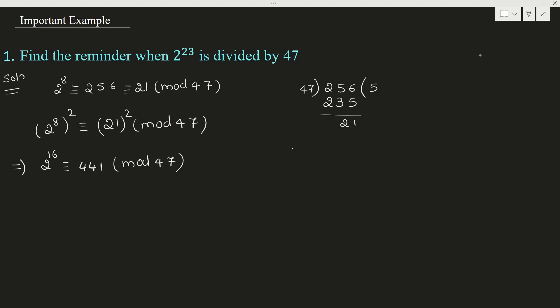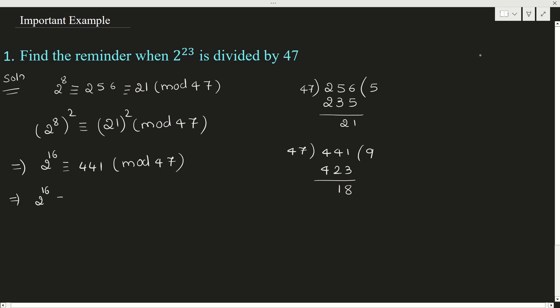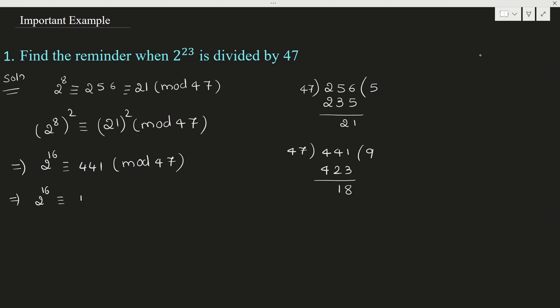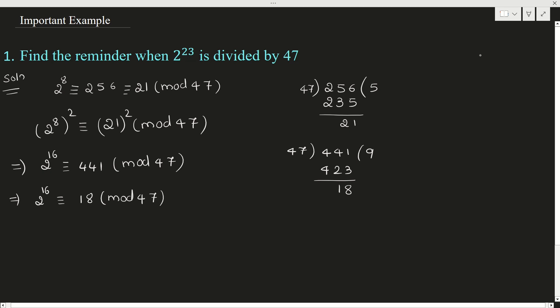Now divide 441 by 47. We know 47 times 10 is 470, so check the previous: 47 times 9 gives 423. So the remainder is 18. We can write 2 to the power 16 is congruent to 18 mod 47. We call this equation 1.